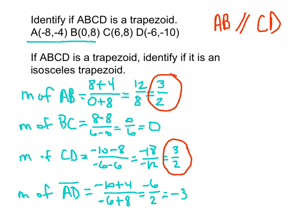Now let's move to this question or this part of the problem where it says identify if it's isosceles or not. So remember that in order to have an isosceles trapezoid, the legs have to be congruent. Now remember that the legs are the non-parallel sides of the trapezoid.